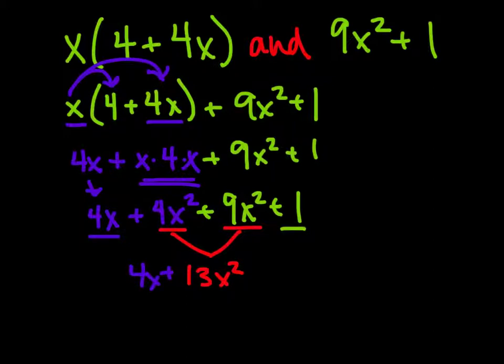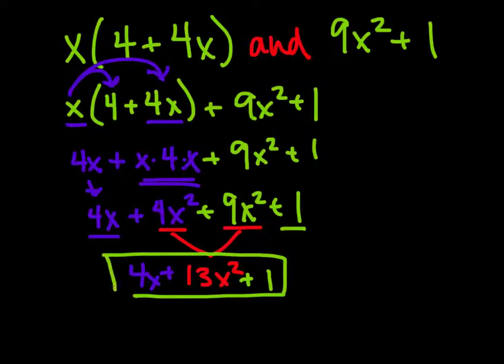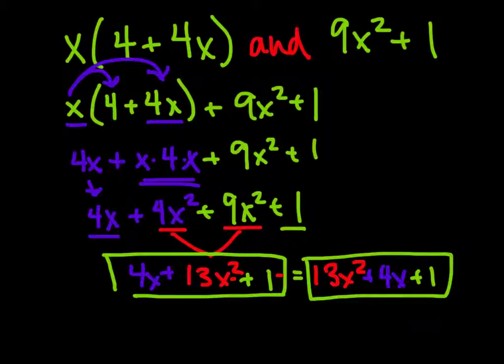We don't have any like term to go with the 1, so it's just 1. So here is my final answer. And I could also rewrite this from the greatest exponent to the smallest: 13x² + 4x + 1.